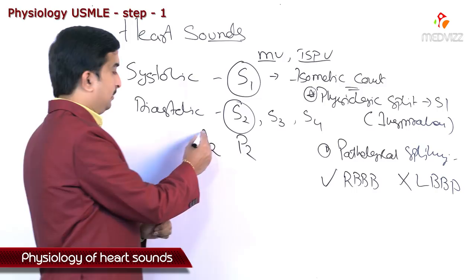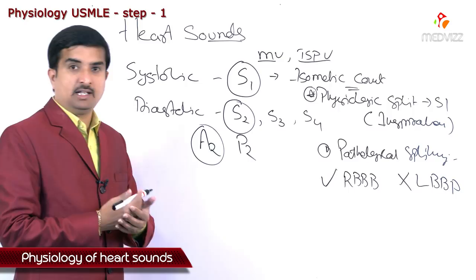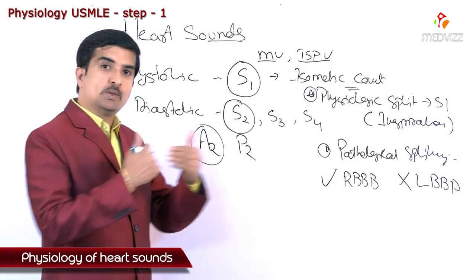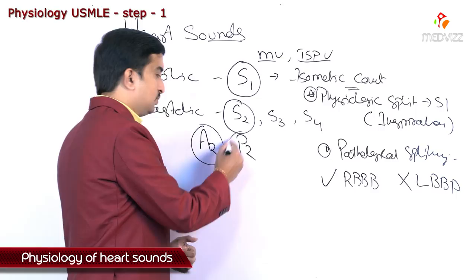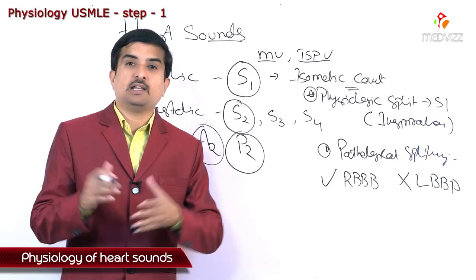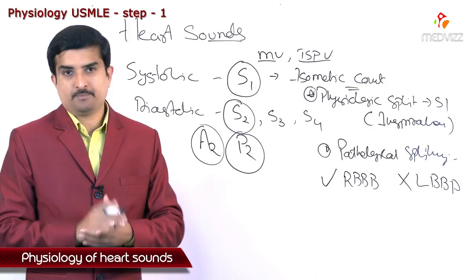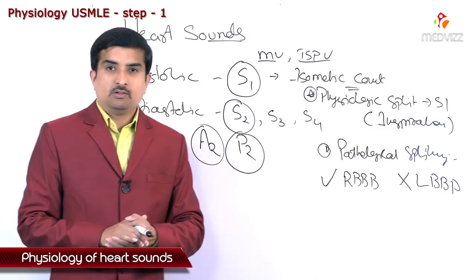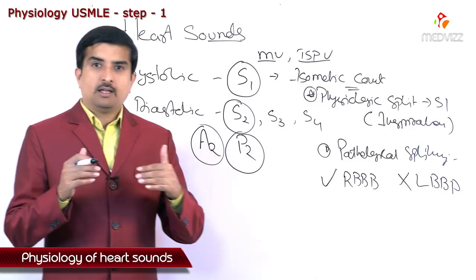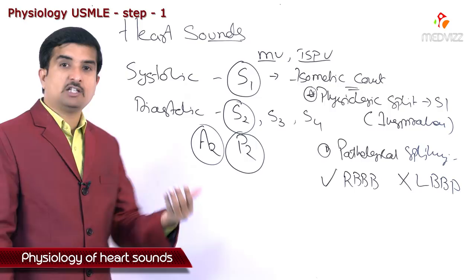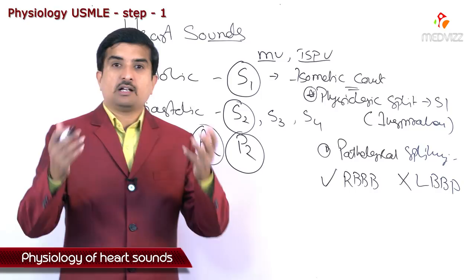If there is delayed filling of the right ventricle due to increased venous return, more blood is pumped toward the pulmonary artery and the pulmonic valve closes after the aortic valve — this is called splitting. Splitting is generally seen because of delayed closure of an individual valve. The delayed closure of the pulmonic valve seen under physiological conditions is called inspiration, which is why we call it physiological splitting — P2 closes after A2 during inspiration.